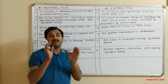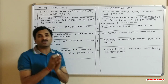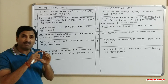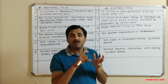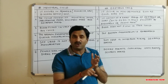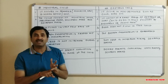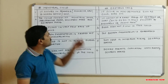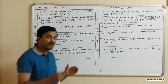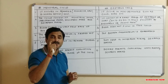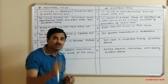The second difference is that the menstrual cycle in primate mammals is of long duration. In the case of human beings, the menstrual cycle is 28 days, and it is completed in four phases: the menstrual phase, the proliferative or follicular phase, the ovulatory phase, and the luteal or secretory phase.